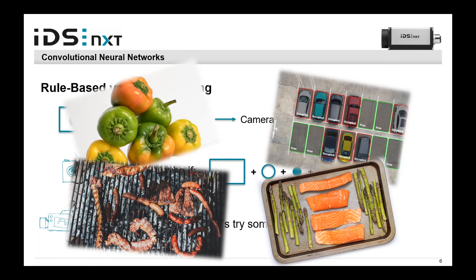So we see that deep learning with neural networks plays the major role when a human can easily decide: this is good, this is bad, this is free, this is not free. With our knowledge, we can easily classify. But for a rule-based system, it's not easy to identify or classify because the input parameters for classification are hard to describe — they are more subtle and not as clear as the camera example with the rectangle and circle. Such applications often arise when dealing with natural resources like fruit and vegetables.